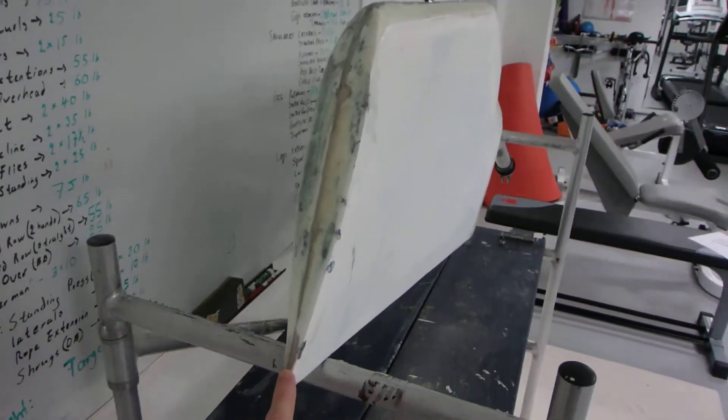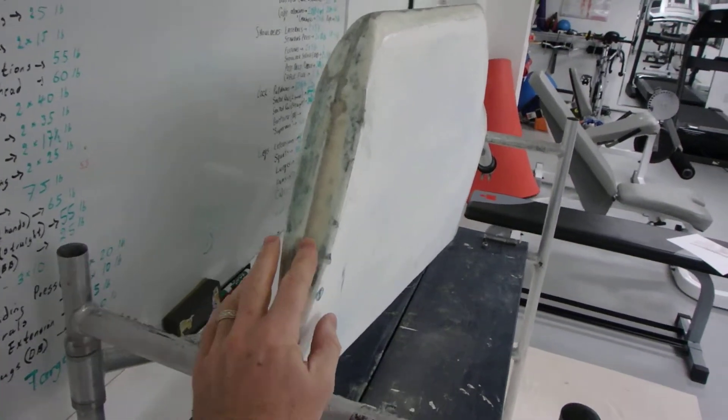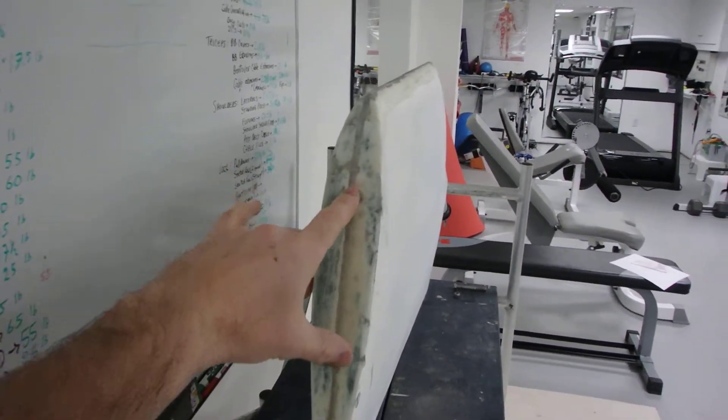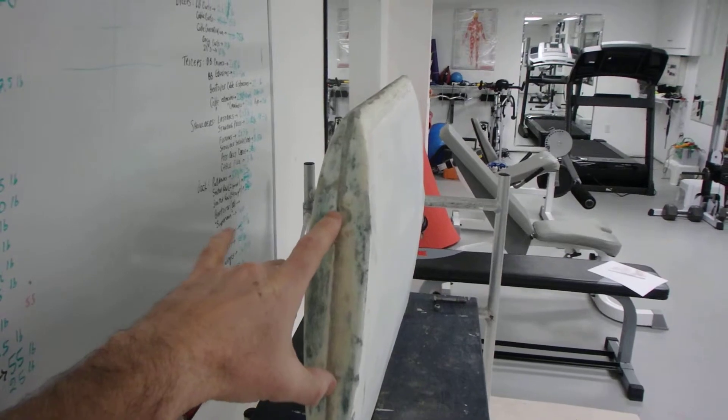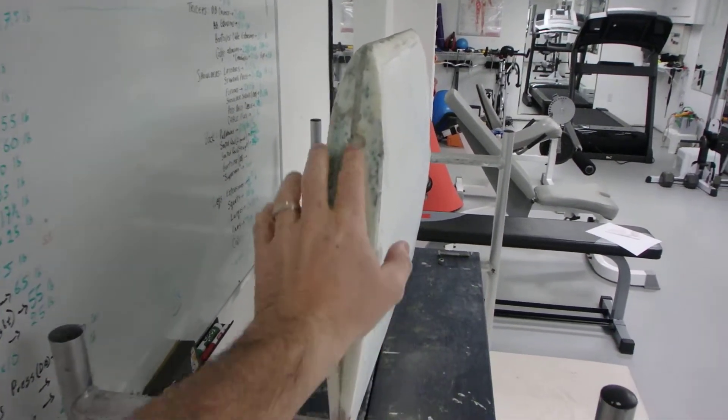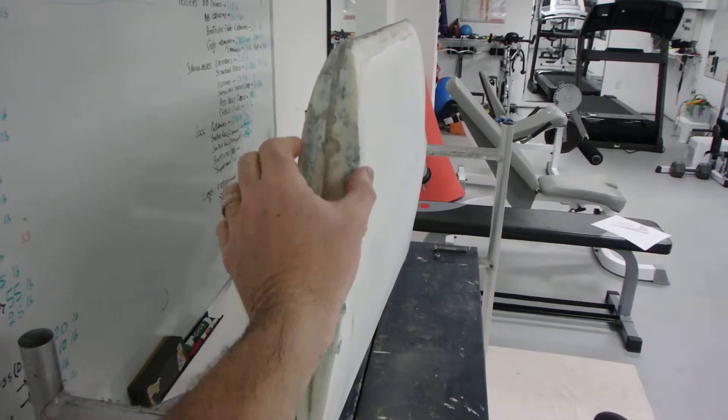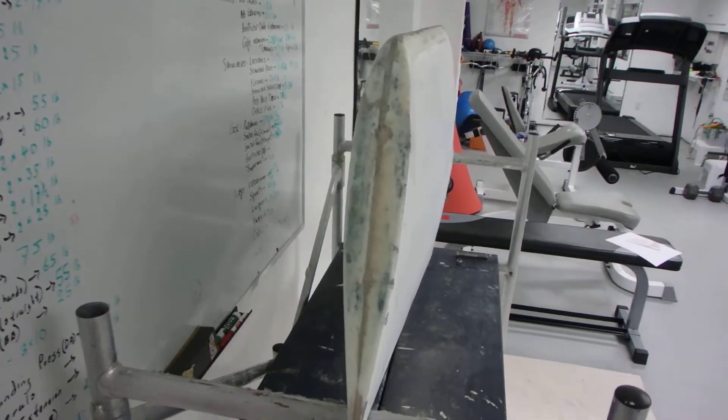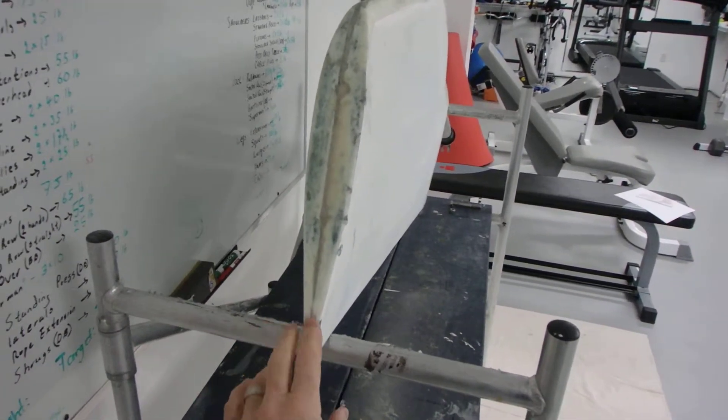So what did I do on the heel? I basically ground out more of these two divots and the split line, and then I filled it with the West Systems epoxy 403 filler. Did that and then once that was good, smoothed it out.